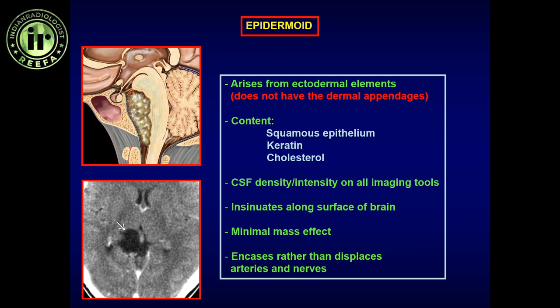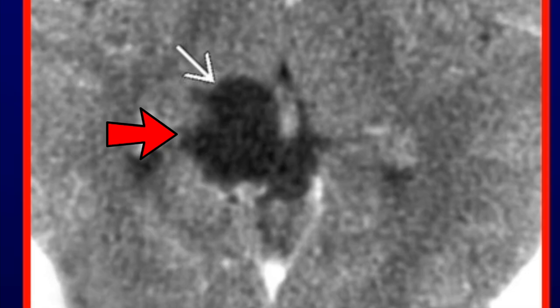In appearance, epidermoid can be frequently missed if small. If large, on CT it is seen as a CSF-density lesion, and on MRI on T2 it is seen as a CSF-intensity lesion. It has minimal mass effect for its size, appearing as a lobulated, bubbly lesion with sacculations along the border, which tends to insinuate along the margins of the brain — encasing rather than displacing structures.